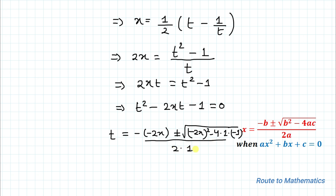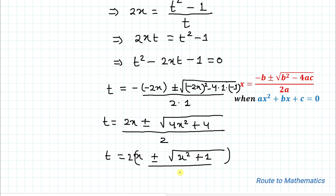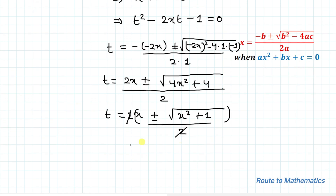So we have t equals (2x ± √(4x² + 4)) divided by 2. Now taking 2 common from the numerator, what we get is t equals x ± √(x² + 1).